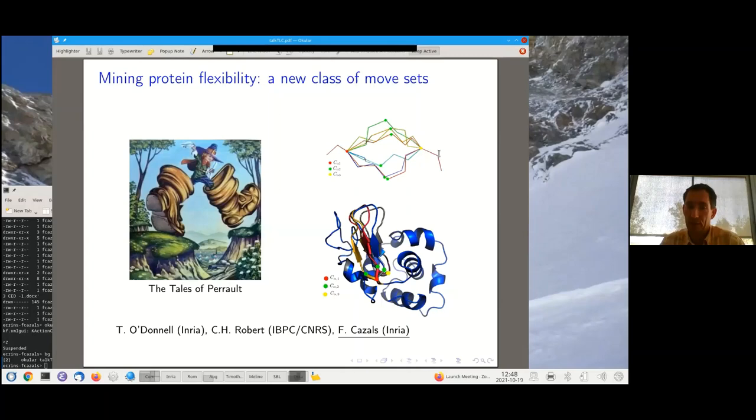And so the bottom right figure is a set of different conformations for so-called CDRs, Complementarity Determining Regions of Antibodies. You know that these are the loops which are typically contacting the antigen. And so as you can see here, we have also generated highly diverse sets of conformations. So this is what I'm going to talk about.